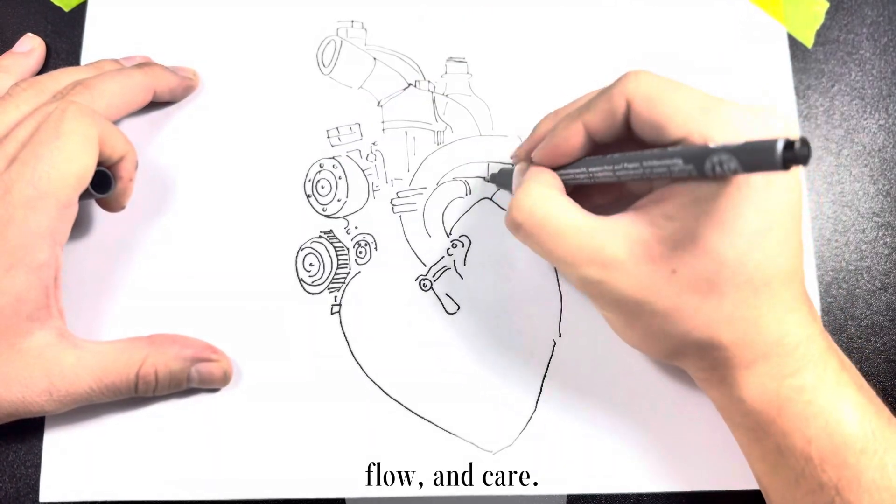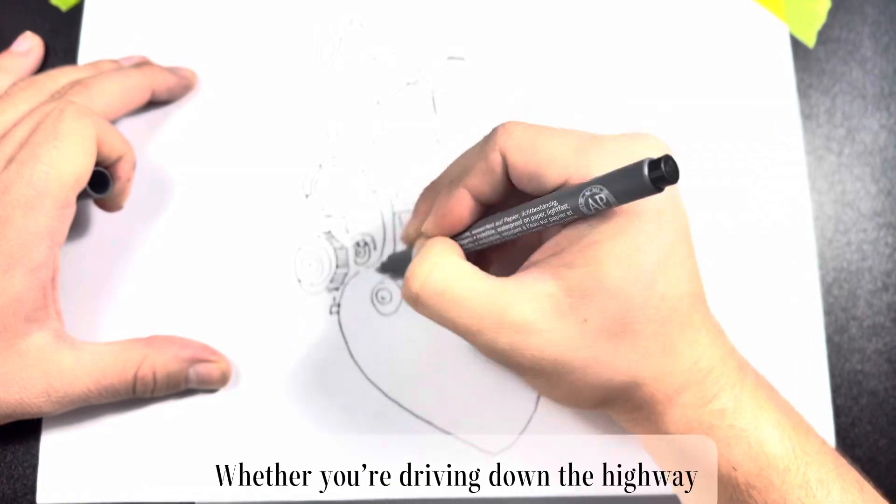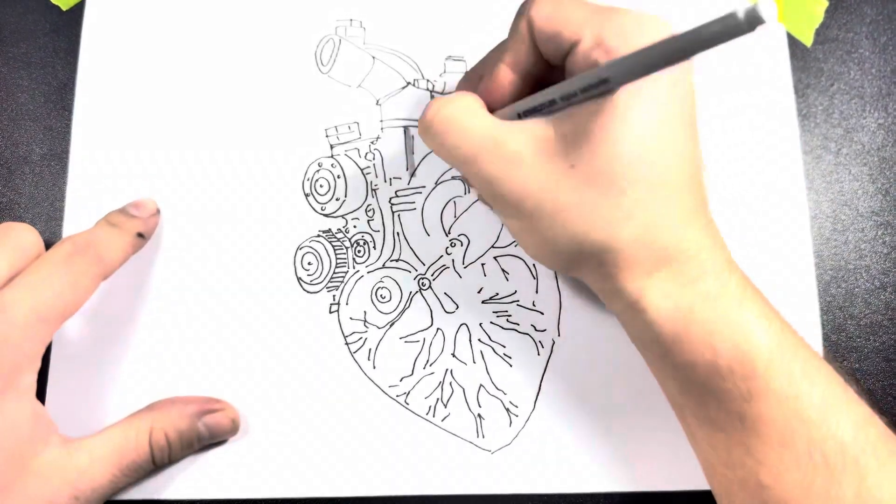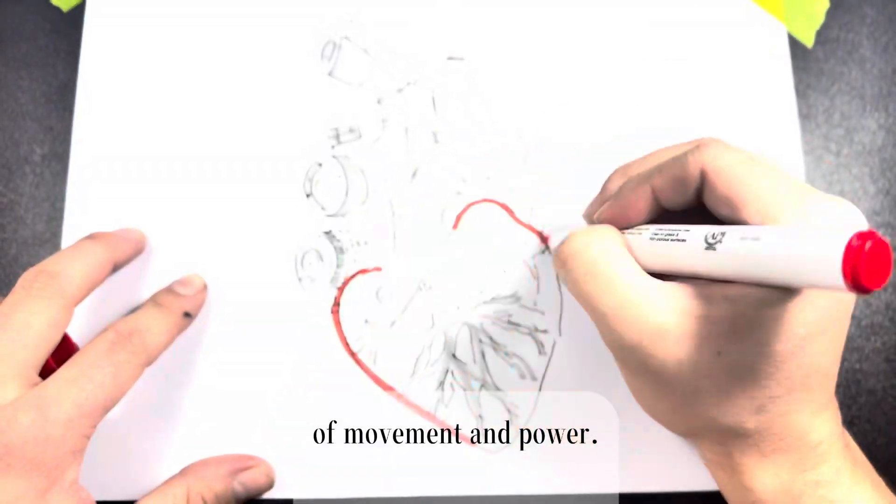The heart and the engine are masterpieces of design—one crafted by nature, the other by engineers. Both remind us of the importance of rhythm, flow, and care. Whether you're driving down the highway or running through life, these two machines are the ultimate symbols of movement and power.